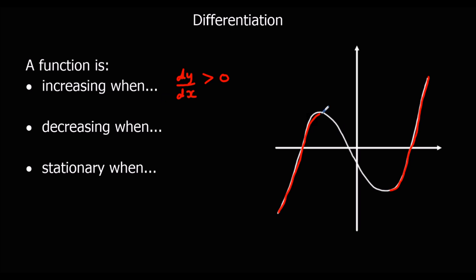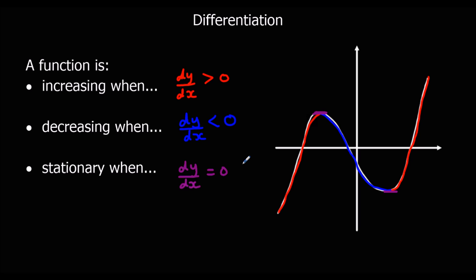It's decreasing, so it's got a negative gradient, when dy/dx is negative — less than zero. And stationary points, that's where there's no gradient: at this moment here where it turns, it's got no gradient, and here where it turns, it's got no gradient. So that's when dy/dx is equal to zero. So a function is increasing when dy/dx is positive, decreasing when dy/dx is negative, and stationary where dy/dx is equal to zero.